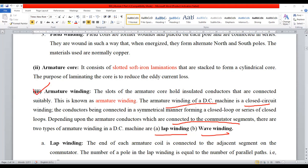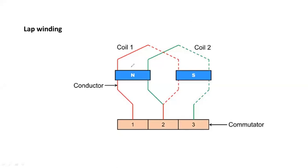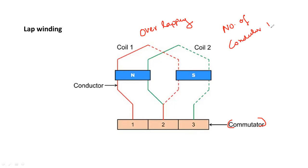In armature winding, there are so many number of coils available. From the commutator segment, one coil is connected to another segment of the commutator, from which immediately another coil is started — there is an overlapping. Such kind of winding is generally called as lap winding. The number of conductors per parallel path in lap winding is always equal to the number of poles. Here, A equals P. With two poles, there are two parallel paths: A equals P equals two.